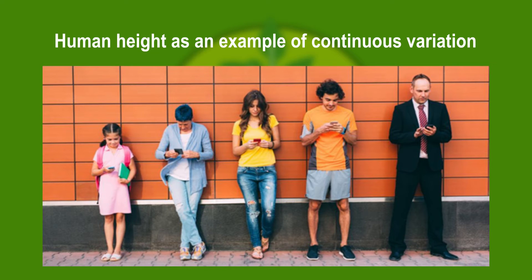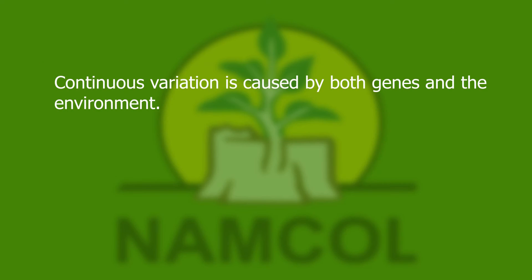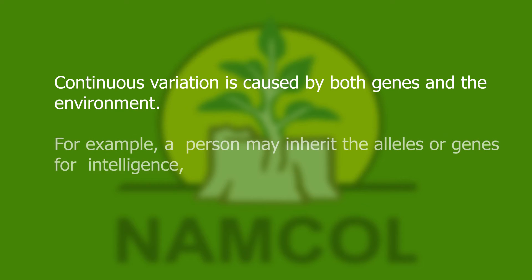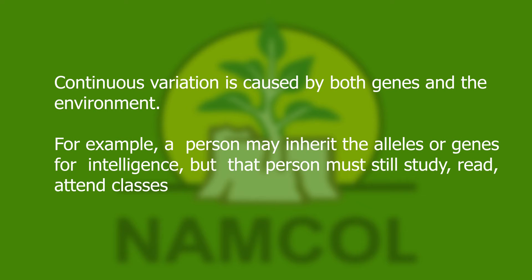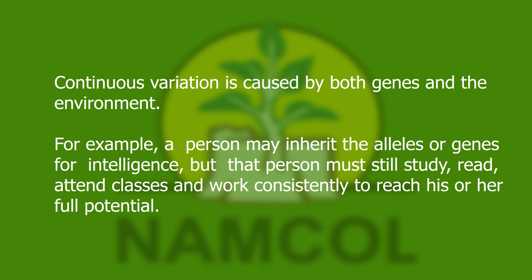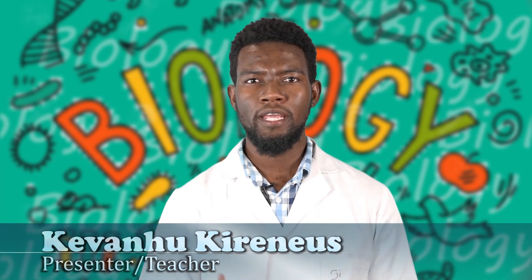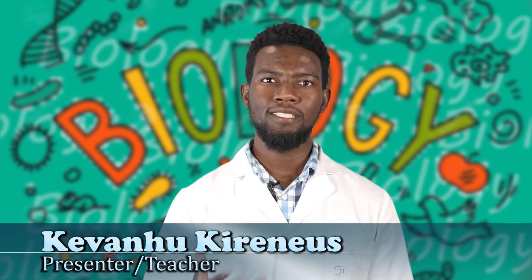There are two extremes: the tallest and the shortest. The other people then fit in somewhere within these two extremes — you are either the tallest or the shortest, or else you fit within these two extremes. Continuous variation is caused by both genes and the environment. For example, a person may inherit the alleles or genes for intelligence, but that person must still study, read, attend classes, and work consistently to reach their full potential. If such a person's environment does not enable them to do so, it can happen that this person may not become an intelligent person.